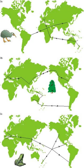Panbiogeography, originally proposed by the French-Italian scholar Léon Croizat, is a cartographic approach to biogeography that basically plots distributions of a particular taxon or group of taxa on maps and connects the disjunct distribution areas or collection localities together with lines called tracks.